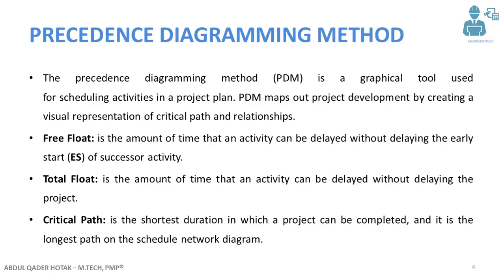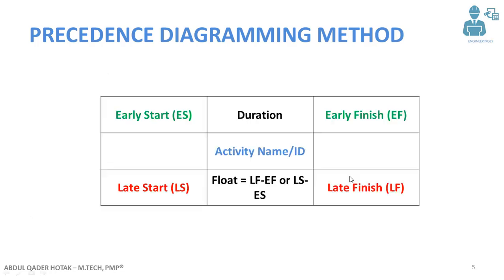Total float is the amount of time you can delay an activity without delaying the total project time. The critical path is the longest path on the project network diagram, and it is the shortest time possible that you can complete a project.